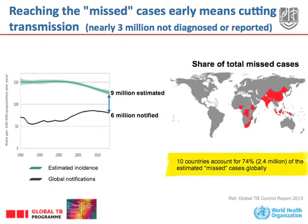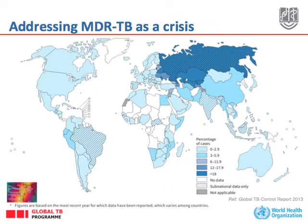The majority are obviously in India. The reasons for missing diagnosis or missing reporting are essentially two: either patients do not access facilities and die, or they access the private sector which does not notify the cases.